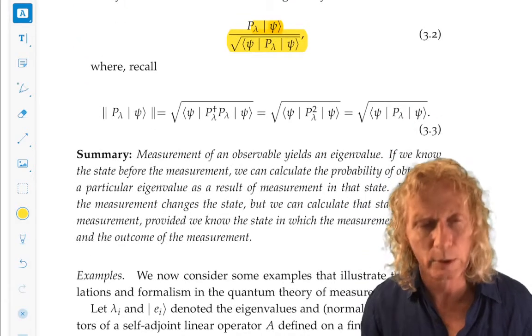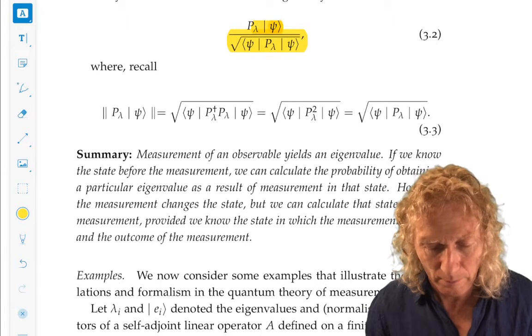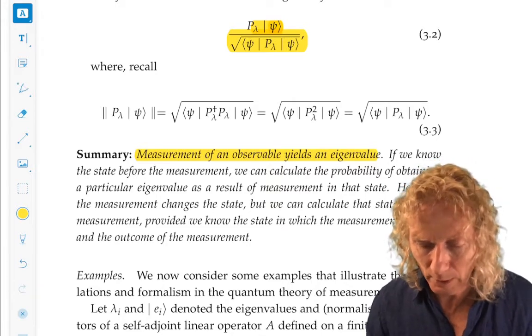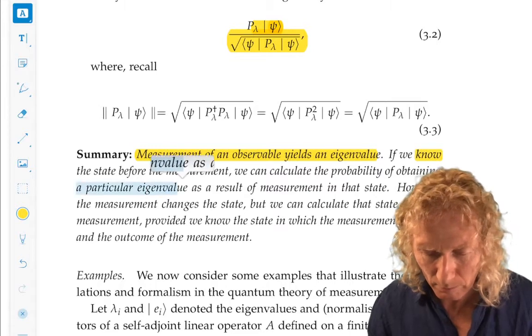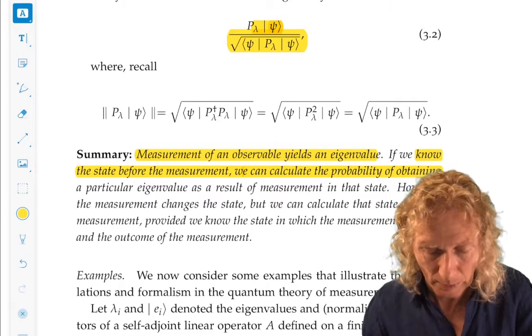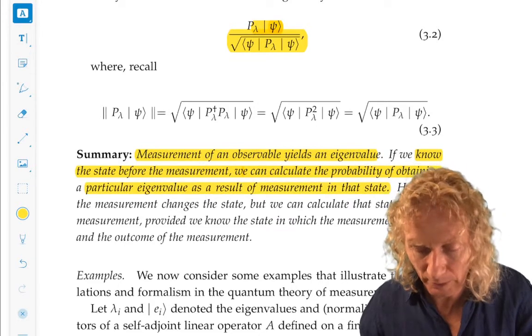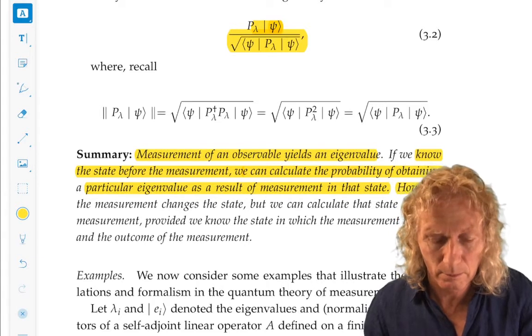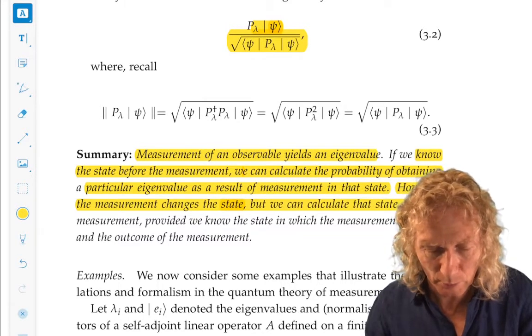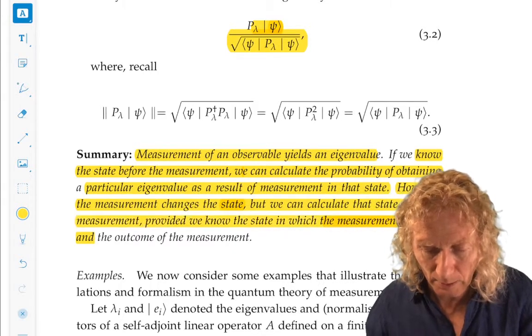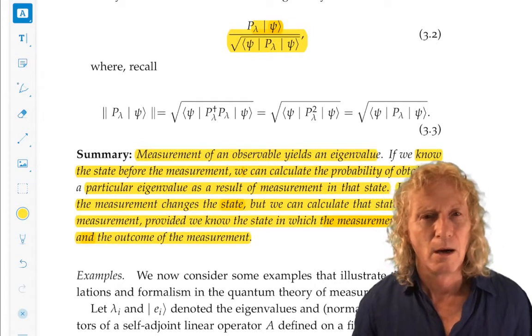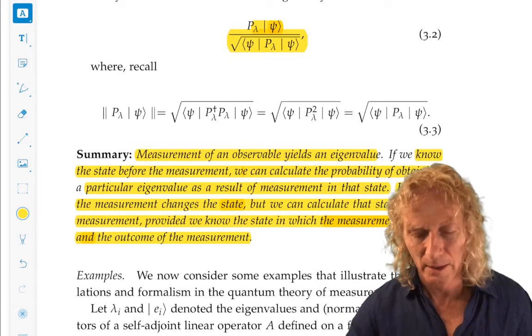In summary, the measurement of an observable yields an eigenvalue. An observable is a self-adjoint operator. If we know the state before the measurement, we can calculate the probability of obtaining a particular eigenvalue as a result of measurement of that observable on that state. However, the measurement changes the state. But we can calculate that state after the measurement, provided we knew the state in which the measurement is made and the outcome of the measurement. That pretty succinctly explains quantum measurement.